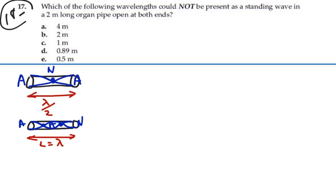As we add anti-node and node pairs, we're going to add a half wavelength every time. So the length of this pipe is going to be equal to an integer number of half wavelengths where n is equal to one, two, three, and so forth.